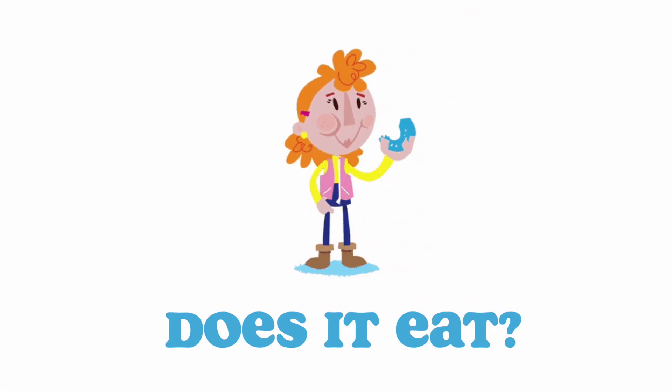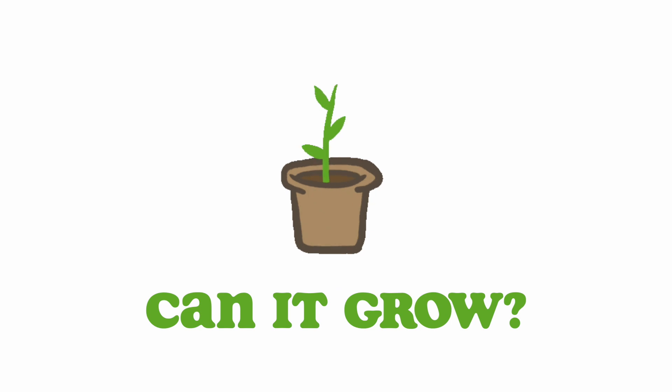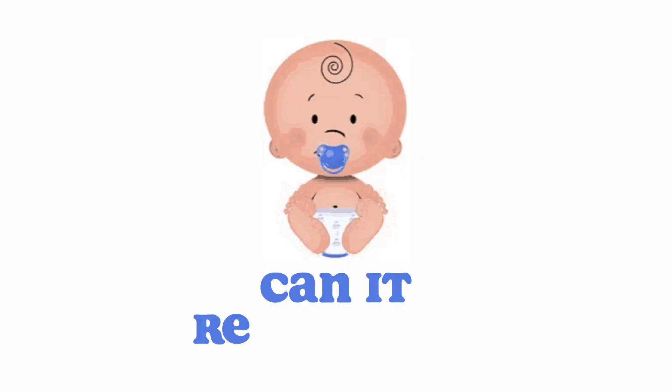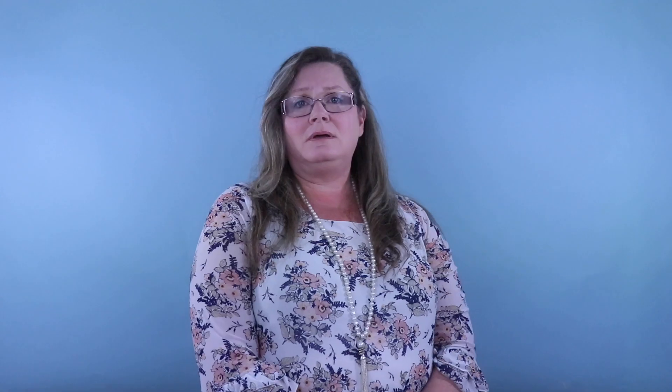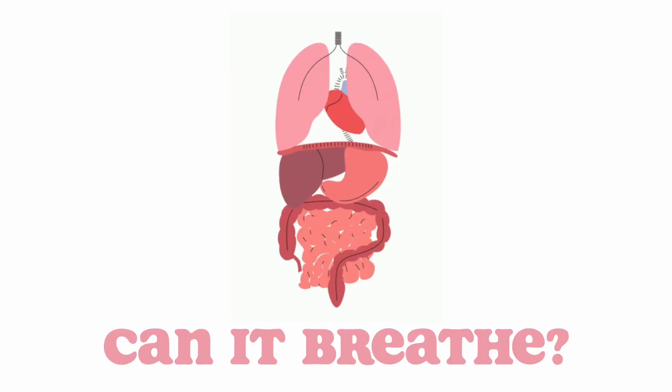Some of those questions are: number one, does it eat? Number two, can it grow? Number three, can it reproduce? That's a big word — we're going to talk about what that word means. And number four, can it breathe? Those are the four questions we need to ask ourselves when we're talking about living things.